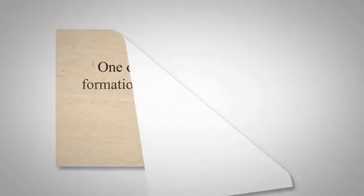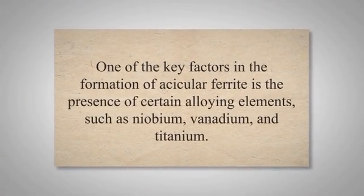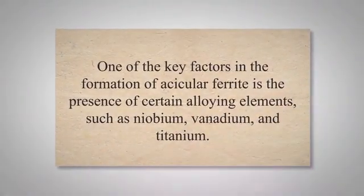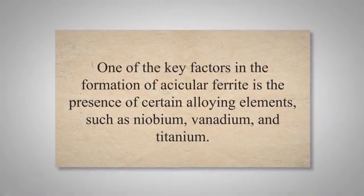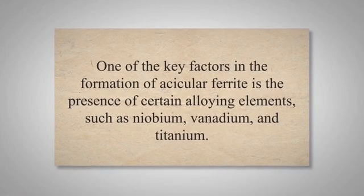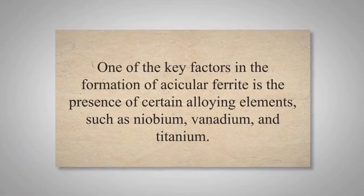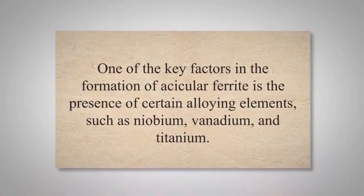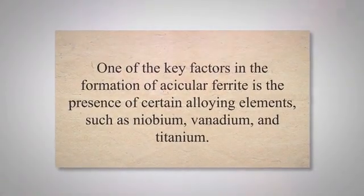One of the key factors in the formation of acicular ferrite is the presence of certain alloying elements, such as niobium, vanadium, and titanium. These elements have a strong affinity for carbon and form carbides during the cooling process. As the steel cools, these carbides act as nucleation sites for the formation of acicular ferrite.